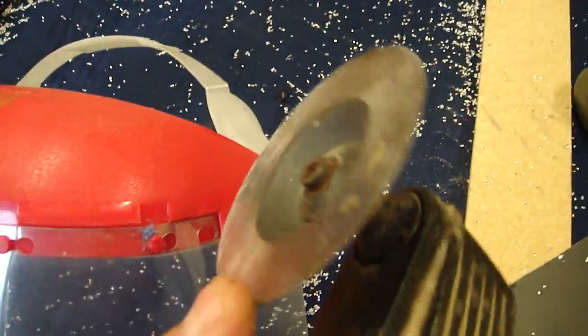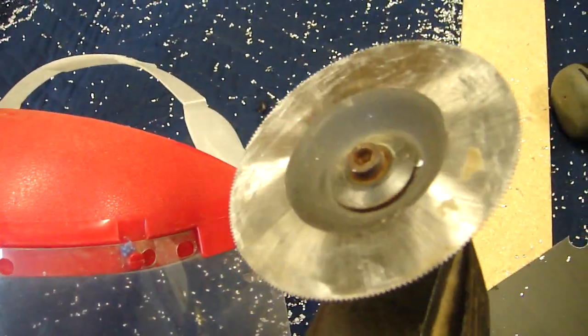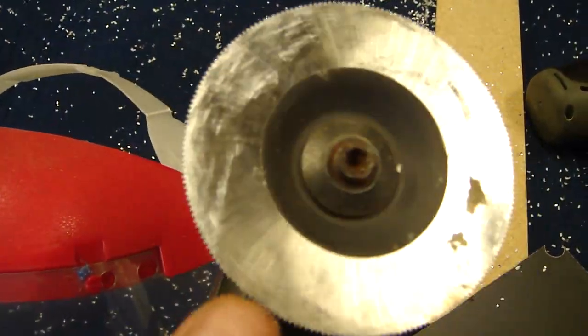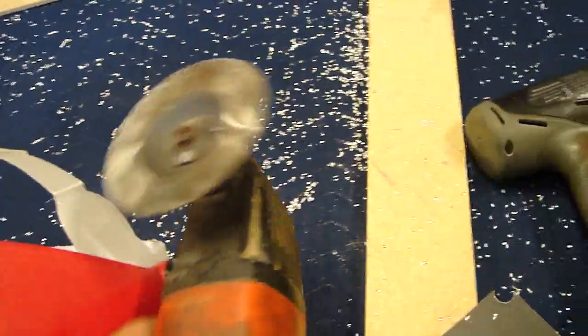This is called a Fein Multimaster. It's a wonderful tool. I've had this about 10 years. This blade is some amazing steel. It will cut through just about anything, it will cut through aluminum like butter.